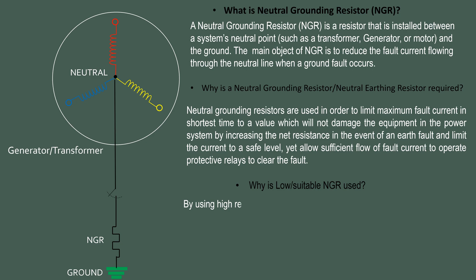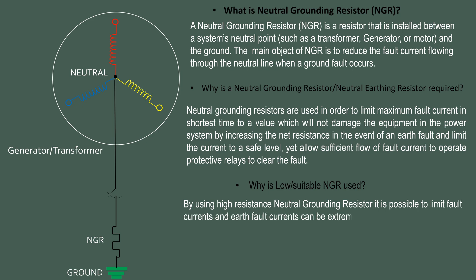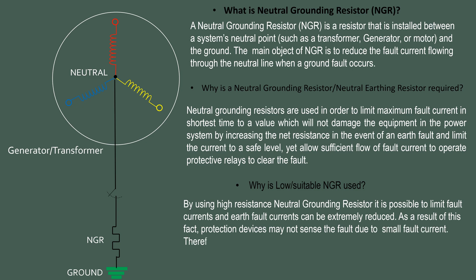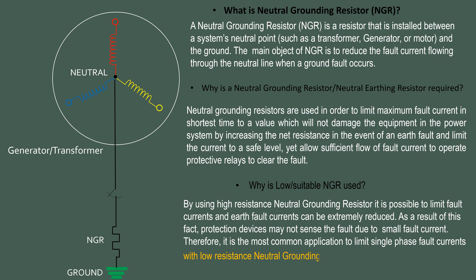Why is low or suitable resistance used in NGR? By using a high resistance Neutral Grounding Resistor, it is possible to limit fault currents — earth fault currents can be extremely reduced. As a result, the protection device may not sense the fault due to the small fault current. Therefore, the most common application is to limit single-phase fault currents with a low resistance Neutral Grounding Resistor to approximately the rated current of the transformer and/or generator.